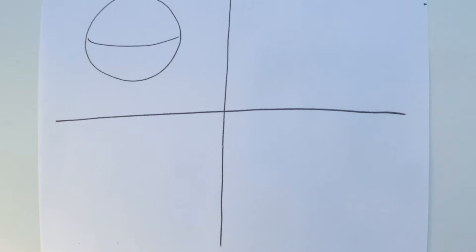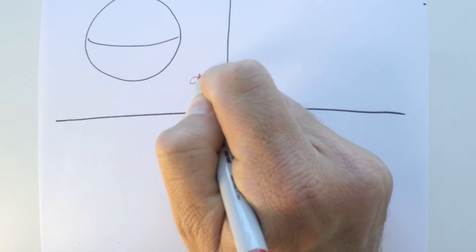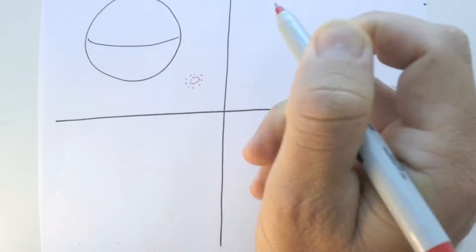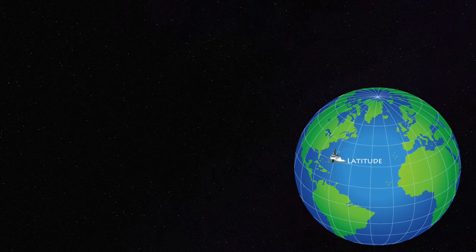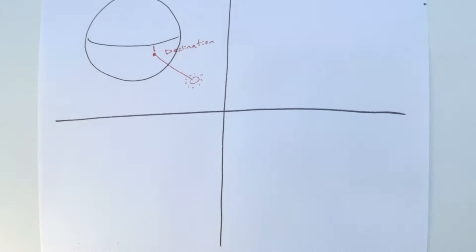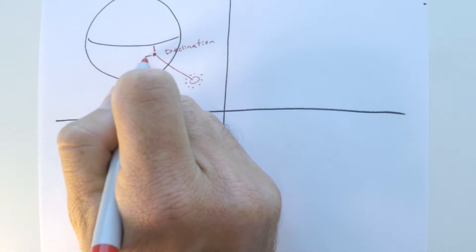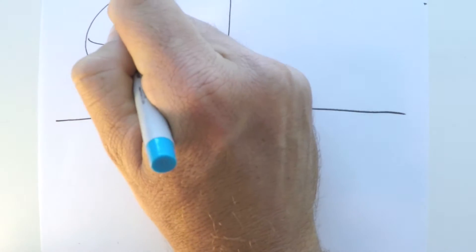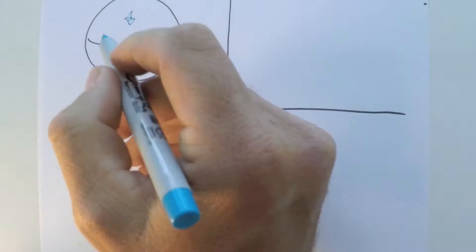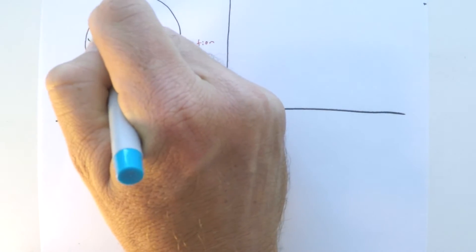There's one conceptual piece we need to talk about first: the fact that the Sun is out there somewhere in space, and if you were to stand on it and drop a line right down to the Earth, it would impact in one particular spot. That spot is called the declination of the Sun. It's measured north or south of the equator, and that spot moves over the course of the day as the Earth rotates up from underneath it. Somewhere on the Earth, our vessel has a position defined as its latitude.